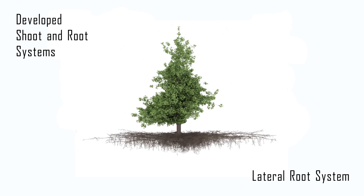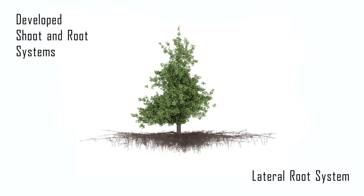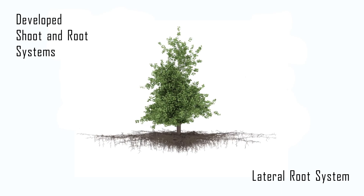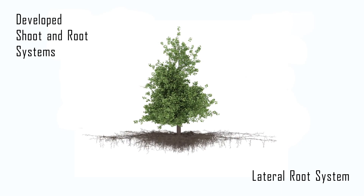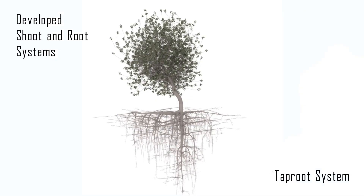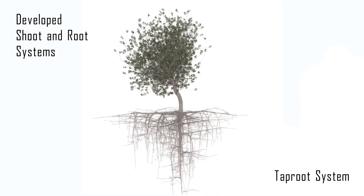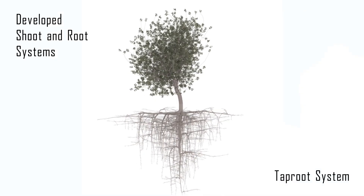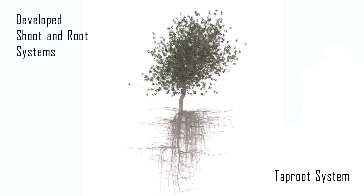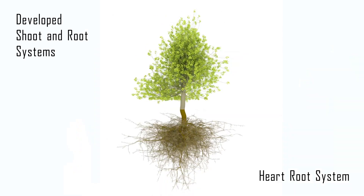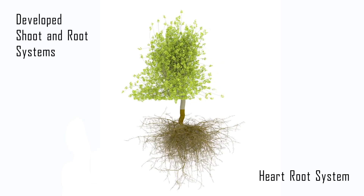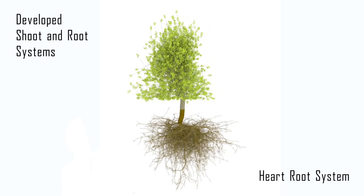Root system types are classified into different categories. The lateral root system extends wide around the tree crown close to the soil surface. The tap root system is characterized by a tap root that grows into the deeper layers of the soil. The heart root system is composed of root branches that grow diagonally into an approximately oval shape.